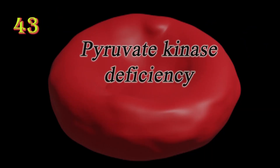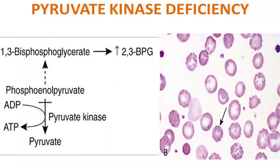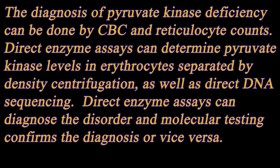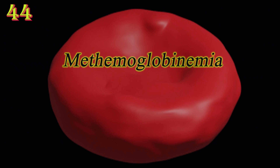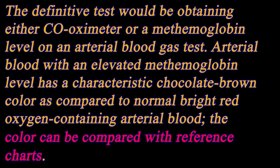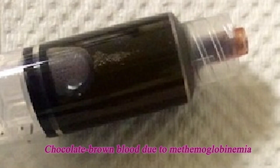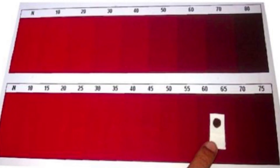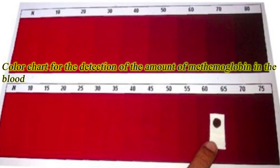Pyruvate kinase deficiency is an inherited metabolic disorder of the enzyme pyruvate kinase that leads to chronic hemolytic anemia. Methemoglobinemia is a condition of elevated methemoglobin in the blood, with some of the iron in hemoglobin being converted from the ferrous to ferric form. Methemoglobinemia can be due to certain medications, chemicals, or food, and can also be inherited.